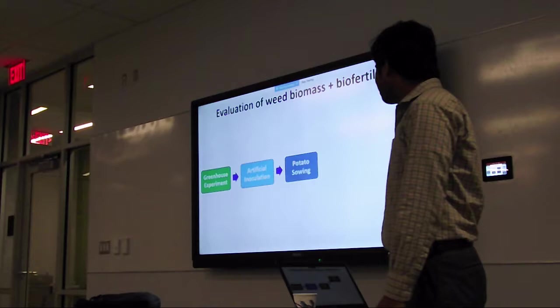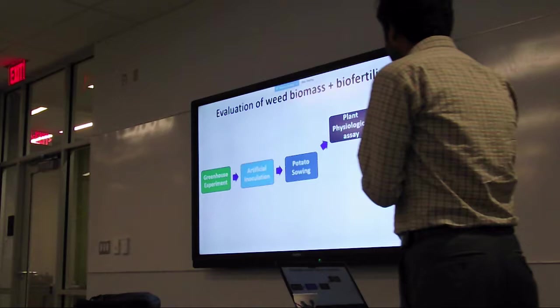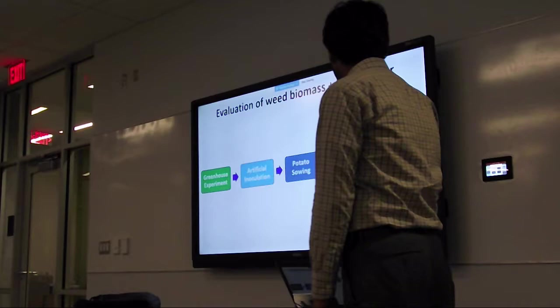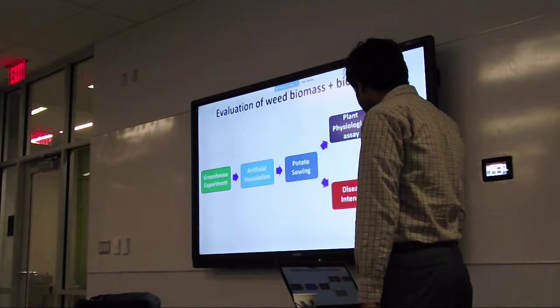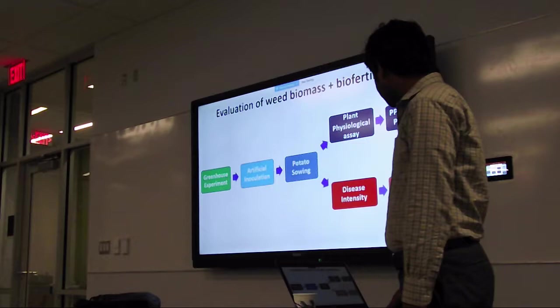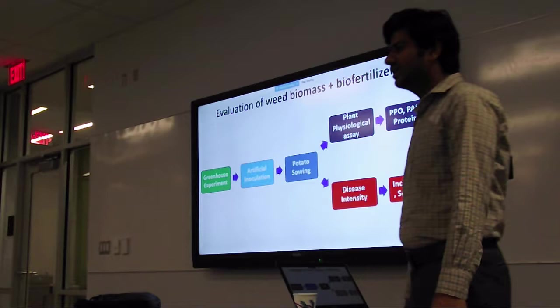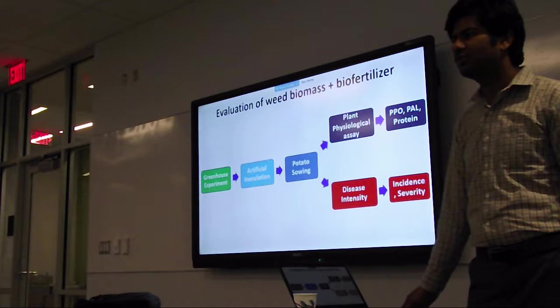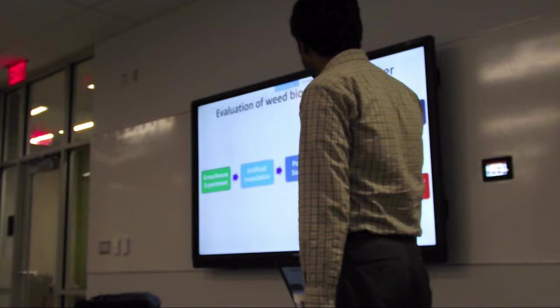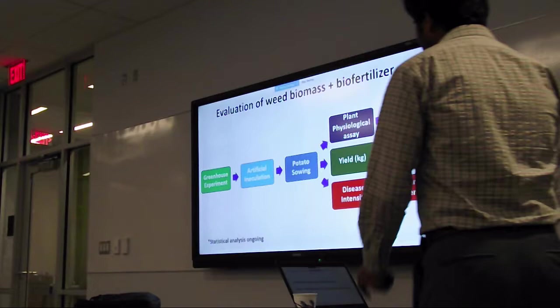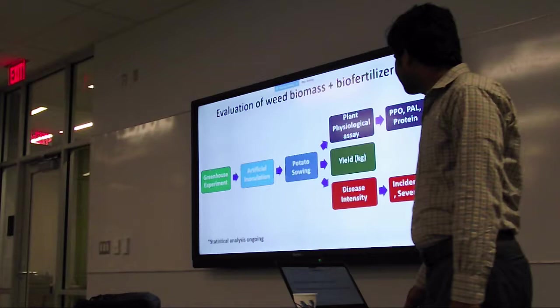After potato sowing, after two months of potato sowing I took leaves of plants and did their physiological assays. These assays include PPO (polyphenol oxidase) and PAL (phenylalanine ammonia-lyase) and protein. I also observed the disease intensity which includes disease incidence and severity. Disease incidence means how much tuber there are and how much are infected and how much are healthy. Severity means how much is the disease intensity on a single tuber itself, not on the whole. Incidence includes all the tubers and severity includes only single tubers. I also recorded yield from each pot - how much is the yield and how this pathogen is affecting the yield of the plant. Statistical analysis is still ongoing, but one thing I got from the field is that these weeds are effective in the field also.